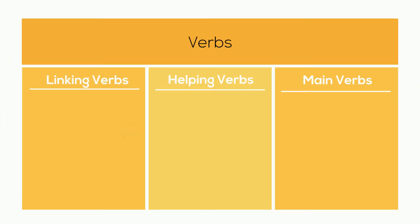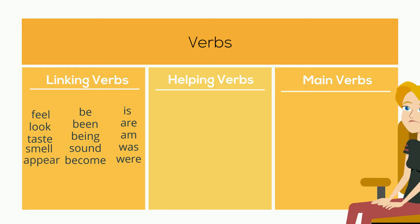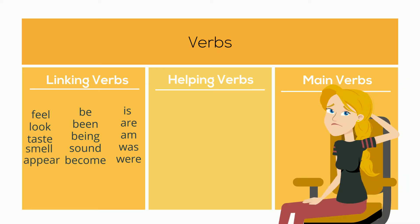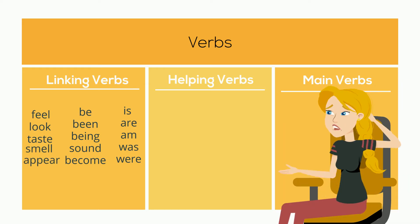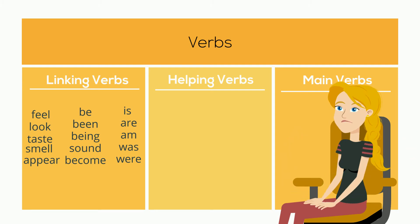Here is a list of linking verbs. Feel, look, taste, smell, and appear can act as either an action verb or a linking verb, depending on whether they describe an action or not.